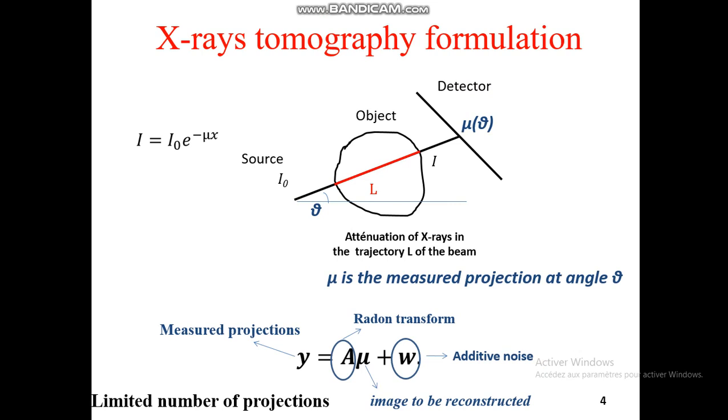The mathematical formulation of X-rays tomography can be explained as follows. When X-rays beam is propagating, they are attenuated according to the exponential formula, with mu as attenuation coefficient. For an angle theta, the detector measures a projection mu of theta by the attenuation of X-rays along the path L of the beam. The final equation governing the system is given by this formula. The goal of this work is to resolve this equation with a limited number of projections, for example, 15 to 60 projections.